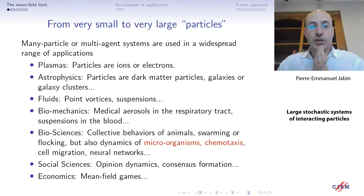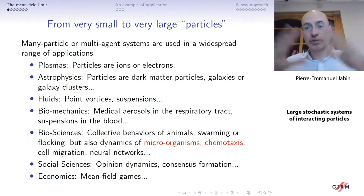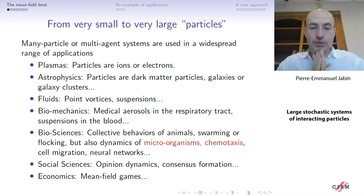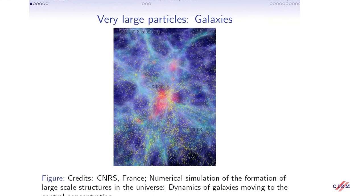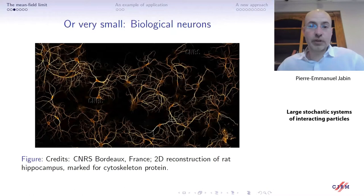Let me go through a brief introduction. As you know, there are now a lot of applications and settings where we use mini particle systems or multi-agent systems — this is just a list of some of those. What I'm mostly going to focus on today is the example of chemotaxis, the classical example due to Keller-Segel. You can have a wide range of what we call particles, from galaxy simulations at the large end of the spectrum, all the way to neurons — very small, and in biology instead of physics.